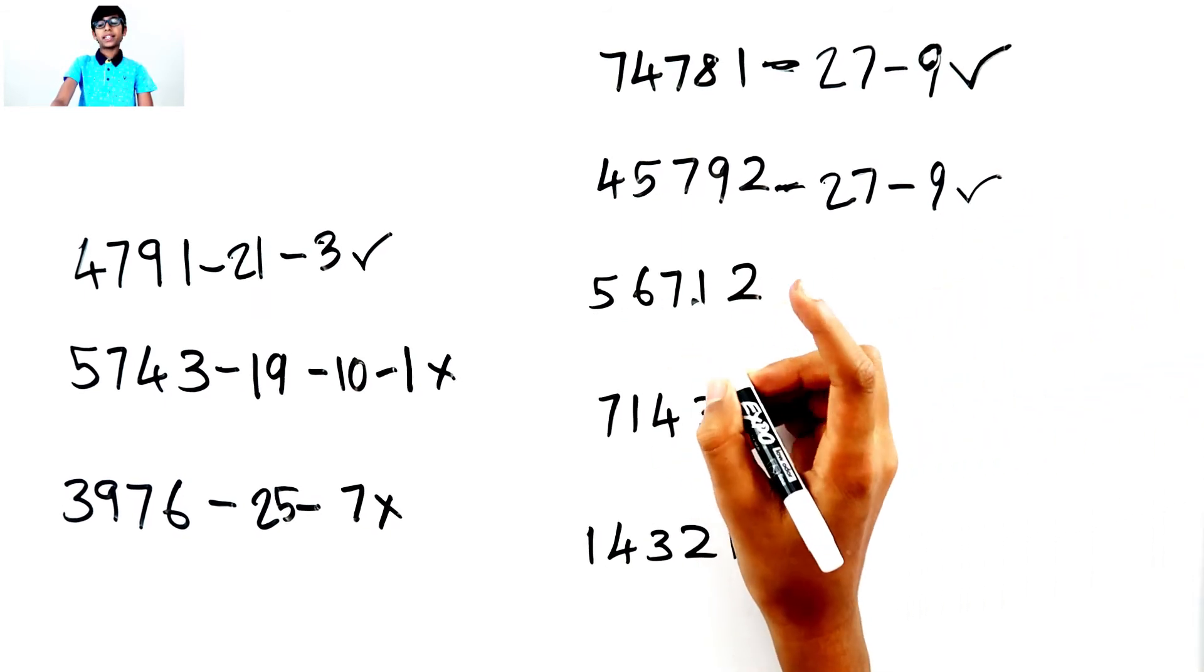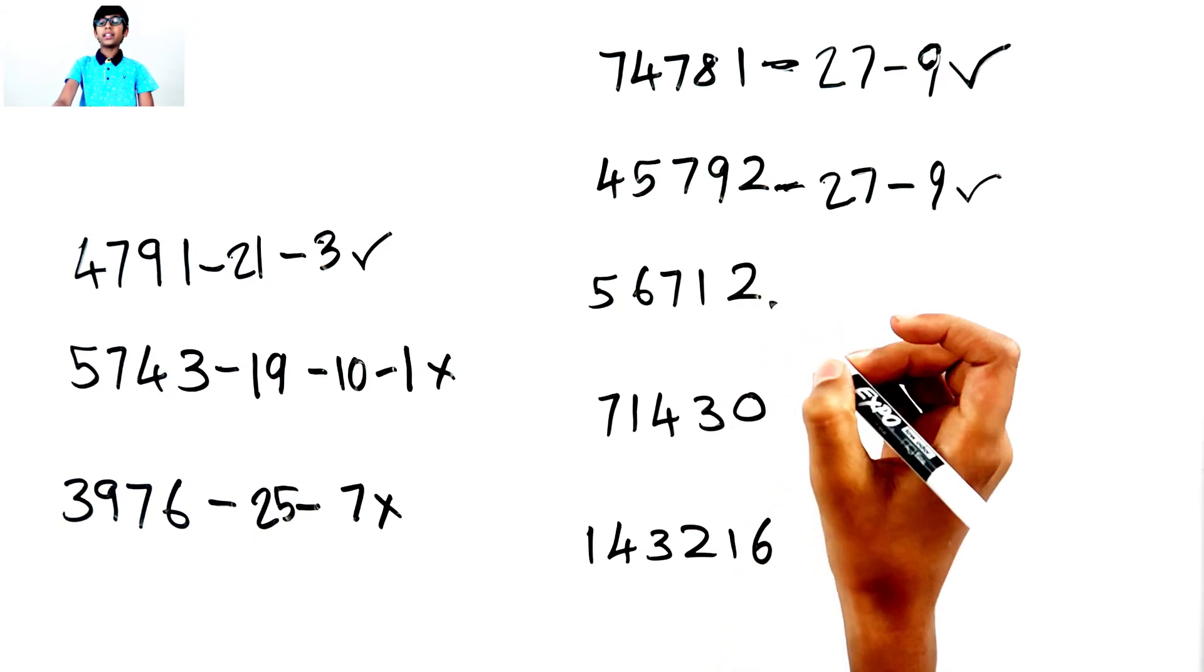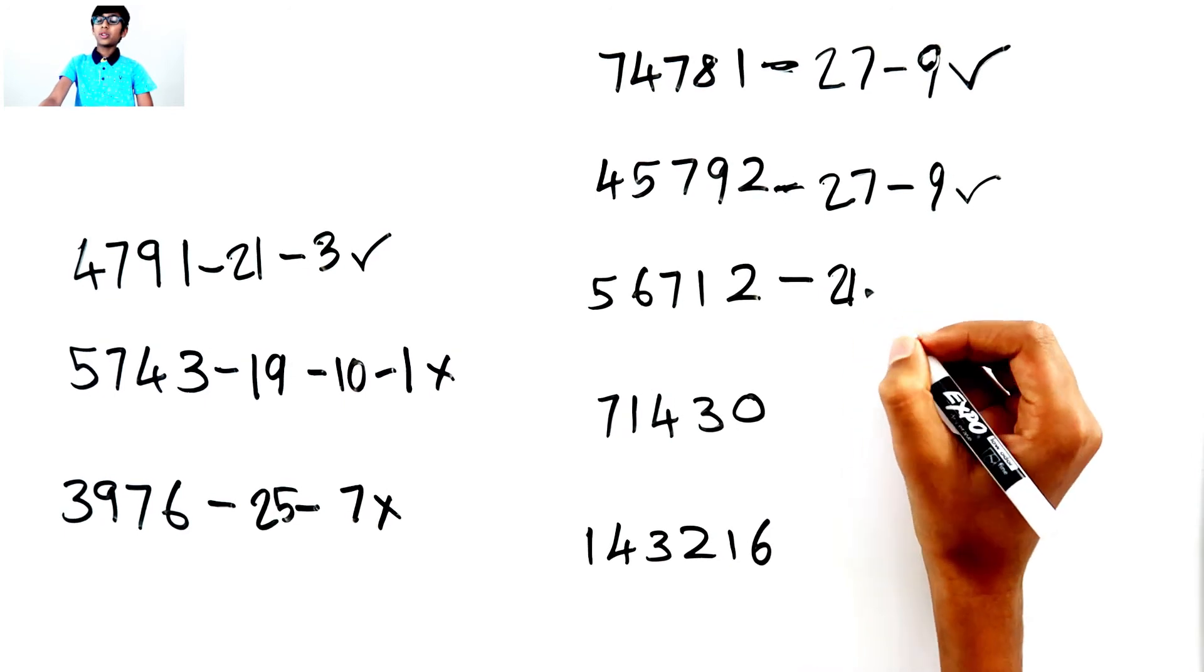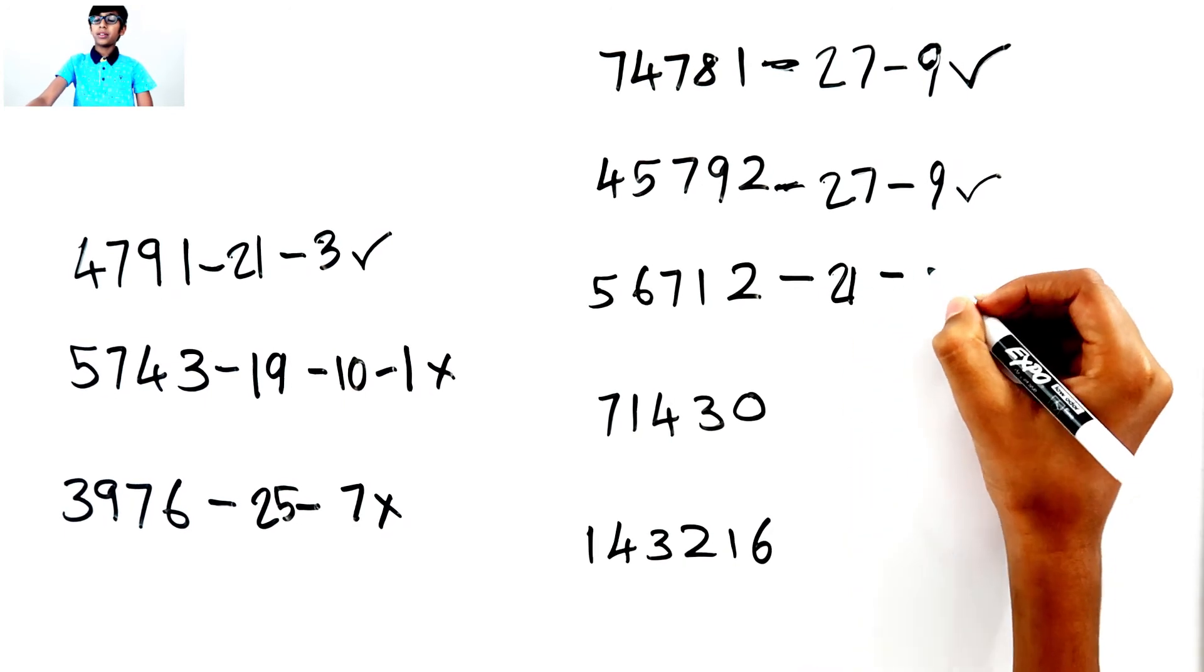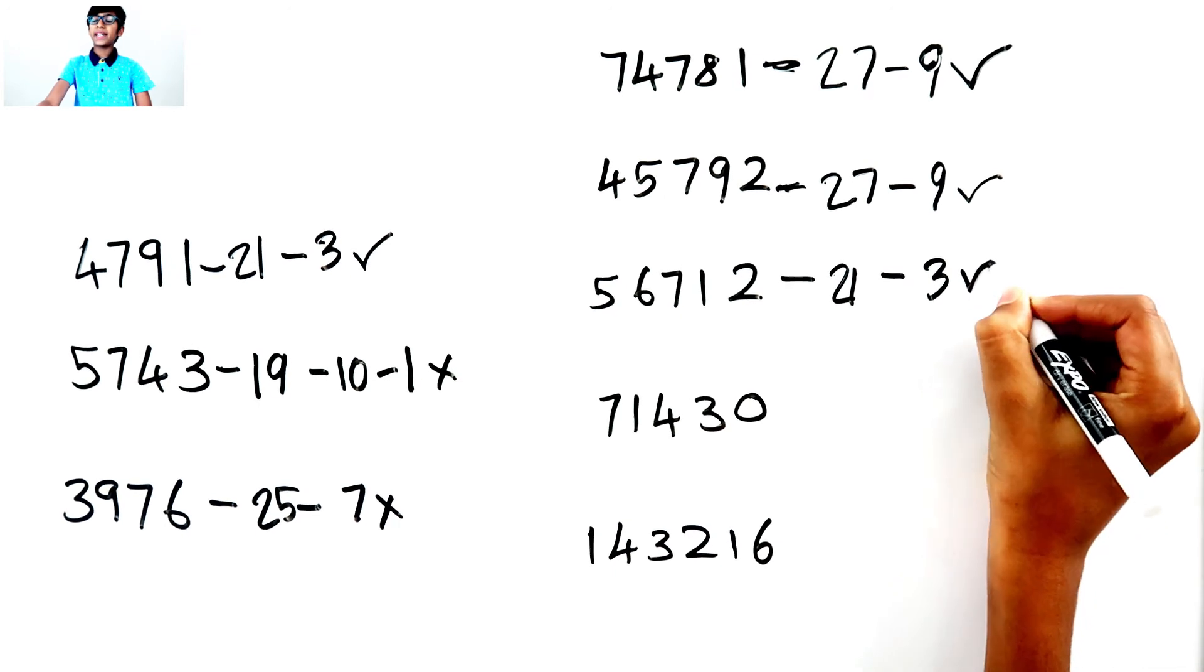5 plus 6. 11. 11 plus 7. 18. 18 plus 1. 19. 19 plus 2. 21. 2 plus 1 is 3. That means this number can be divided by 3.